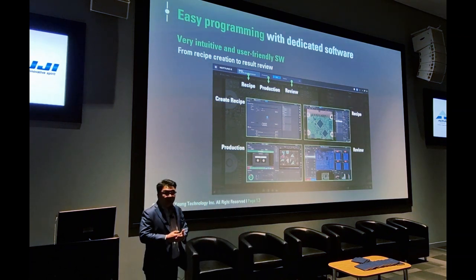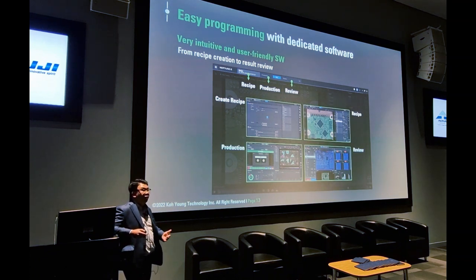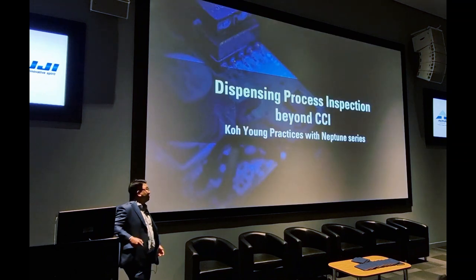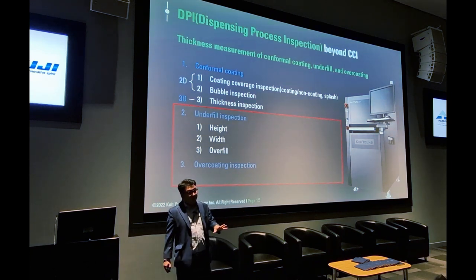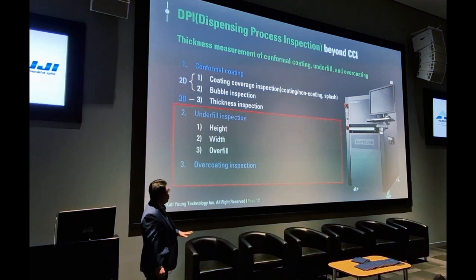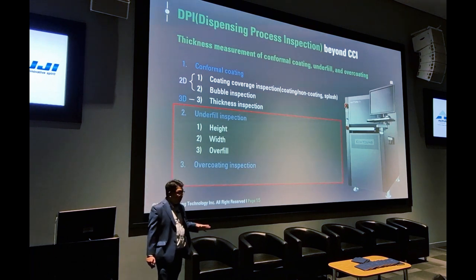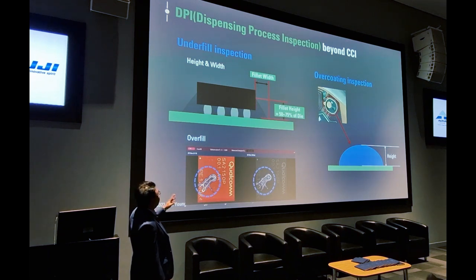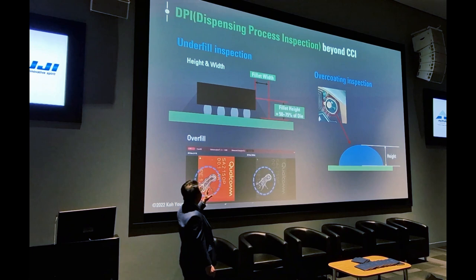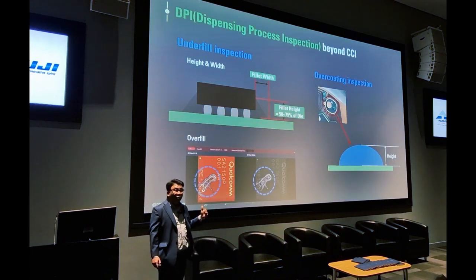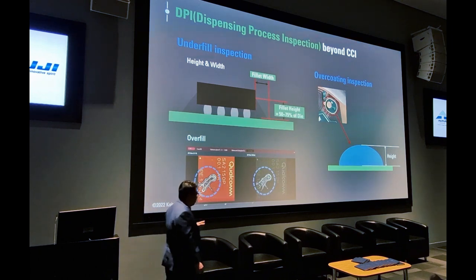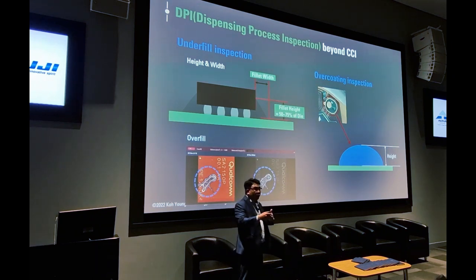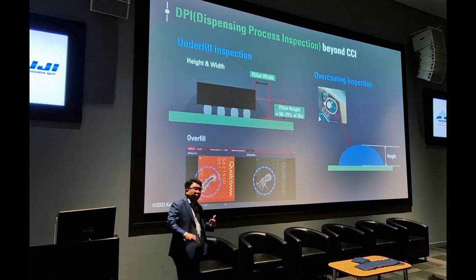We just released the product last year, and the software design and ease of use is really, really good. One of the biggest pieces of feedback from our existing customers is that the software is easy to understand and easy to operate. The Neptune system is designed to measure transparent materials — not only conformal coating, but also underfill material and glue as well. For underfill inspection, the challenge is that customers want to check the fillet width and fillet height of the underfill material underneath components. By having measurement capability, we are able to measure height and distinguish the underfill width, checking whether it is properly dispensed underneath QFN components.